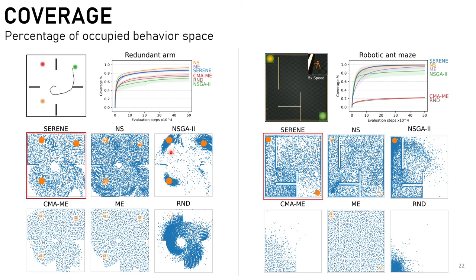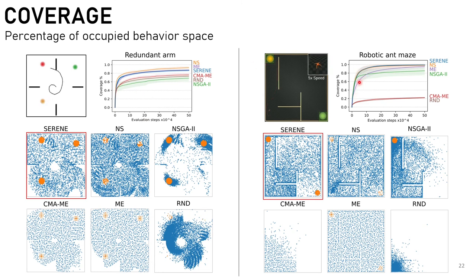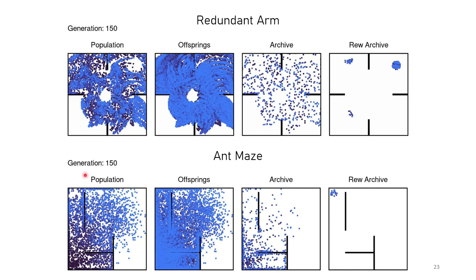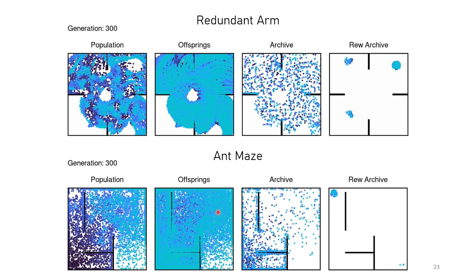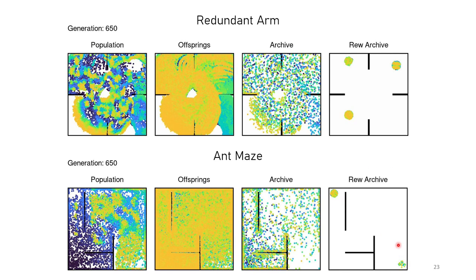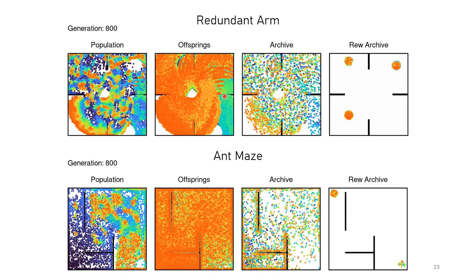NSGA-2, while exploring reward areas well, cannot completely explore the full search space. MAP-Elites explores the space very well but takes much longer to reach the same coverage level, particularly in the robotic hand maze, while CMA-ME sometimes has difficulties exploring the whole space. SERENE's exploration is also very fast — after just 300 generations, basically the whole space is covered and some reward areas are discovered. By around 800 generations, the space is completely covered and reward areas are also very densely explored.